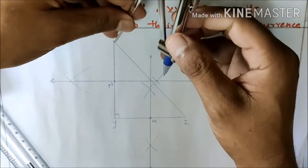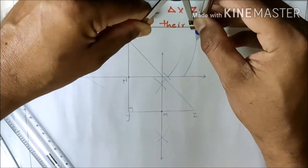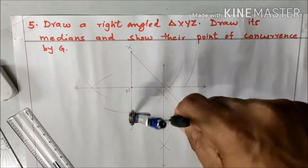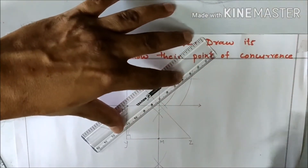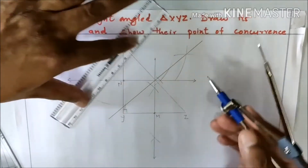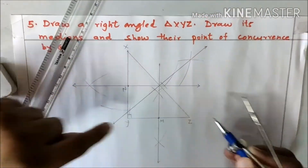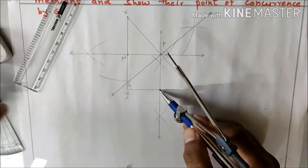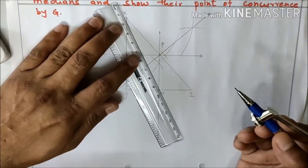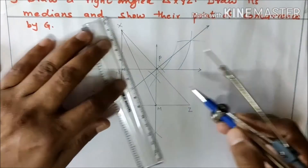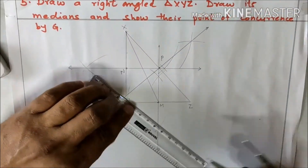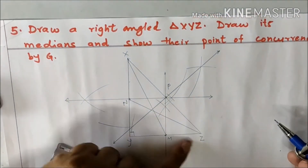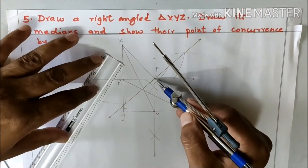Now we will bisect XZ. Take the length more than half of XZ and make arcs up and down of the segment. Place the compass at the other corner of XZ and make arcs up and down. Join the point of intersection. This is the bisector of side XZ. Let this midpoint be P.